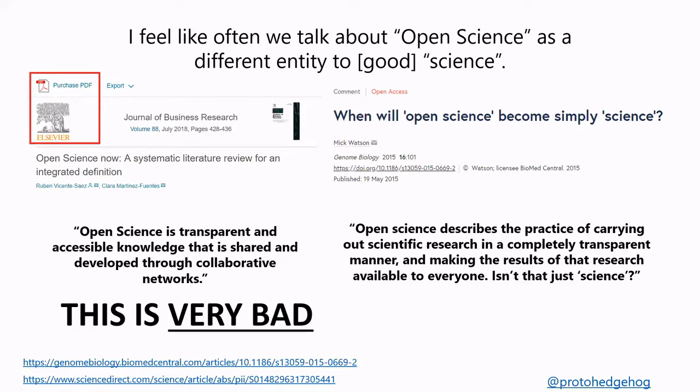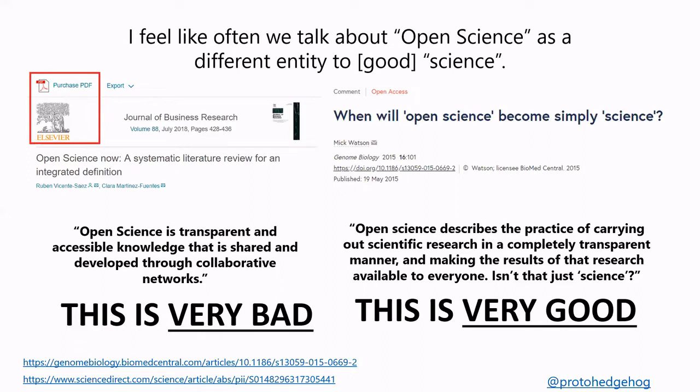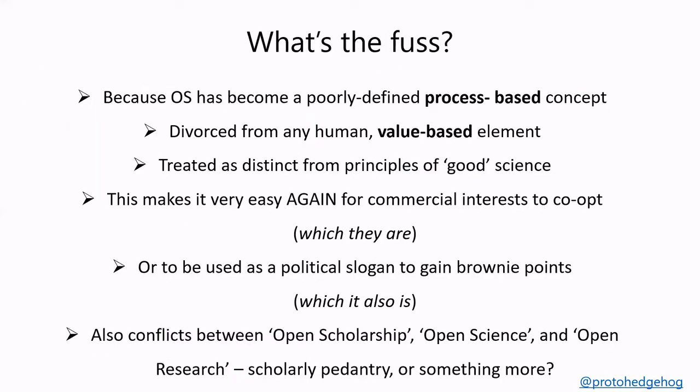I think the difference is that defining open science as purely process-based and as inherently different from just science is very bad. Mick's approach is actually good because he's talking about the principles of science. To me, open science has become a poorly defined, process-based or output-based concept, divorced from any human value-based element or the principles of what makes better research. This leads to a dichotomy where you have people who claim to be open scientists, and people who perhaps do what we might call open science but just don't call themselves open scientists.